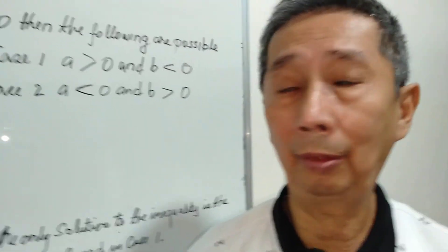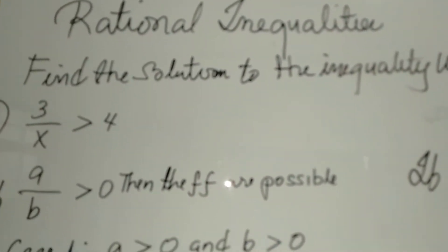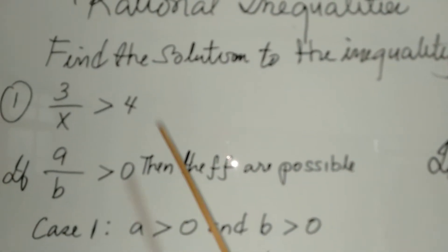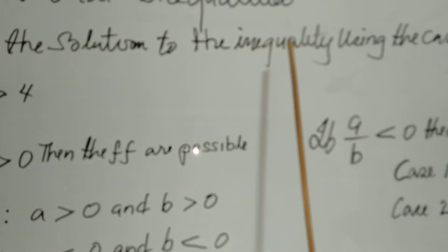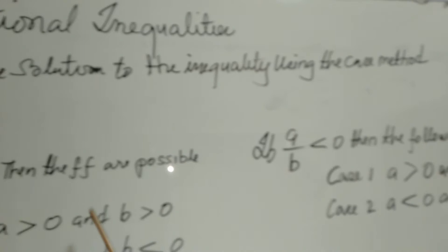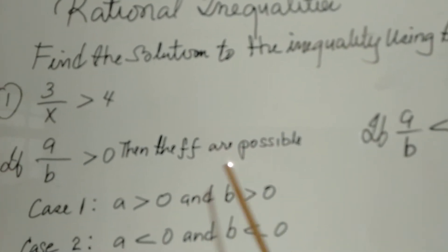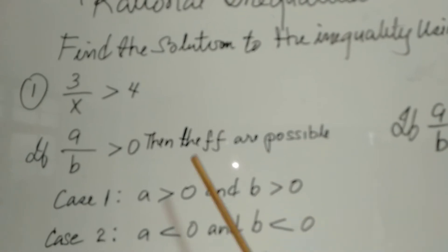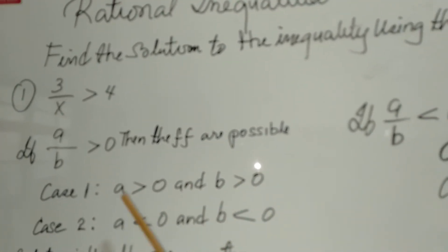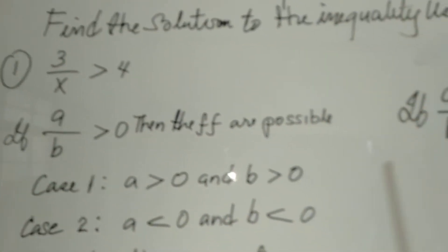Today we're going to demonstrate how to solve rational inequalities. We have one simple problem here, and we're going to find the solution using the case method. In solving inequalities, we are choosing between two conditions where a over b is greater than 0, or a over b is less than 0.